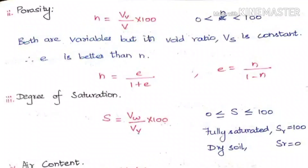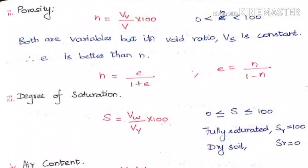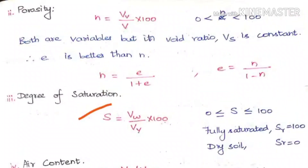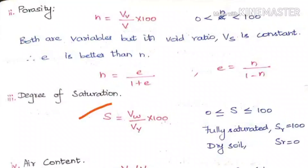The third property of soil is degree of saturation. This is purely based on the volume of water — how much the soil is saturated. S is the degree of saturation, given by the formula: volume of water divided by volume of voids, multiplied by 100. The range is 0 to 100. When S = 100, the voids are completely filled with water and the soil is fully saturated. When S = 0, the voids are filled with air alone, and the soil is called dry soil.